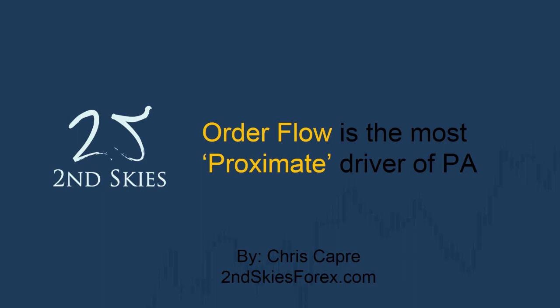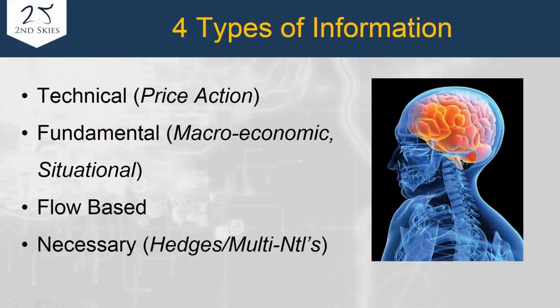What access do we have? We have access to news, but that creates a problem because there's an immense number of interpretations. What we do have access to is price action, and price action is reflective of the order flow. Order flow is the most dominant and most proximate driver of price action. There are four types of information available: purely technical information such as price action — double tops, 200 SMA, Fibonacci retracements — and there are a fair number of different technical reasons.